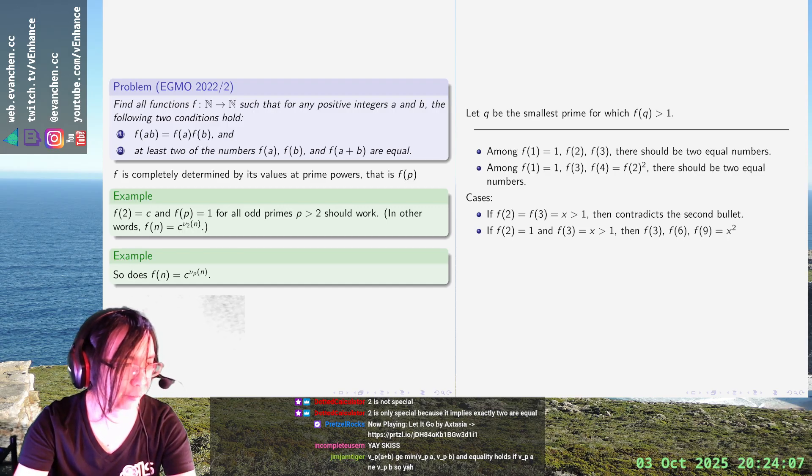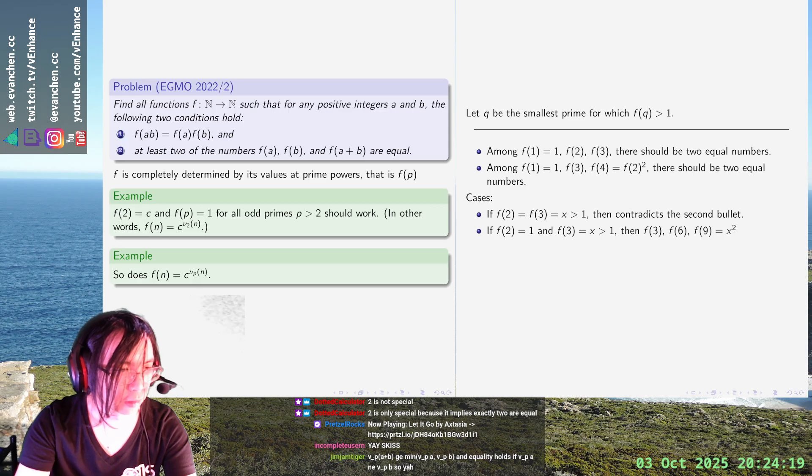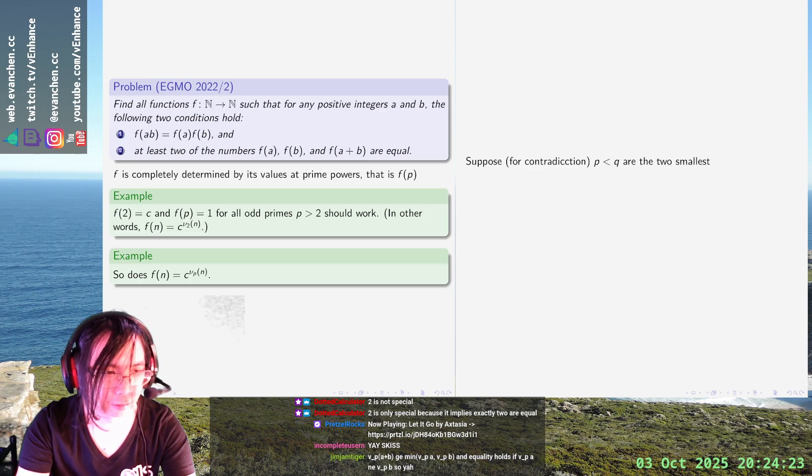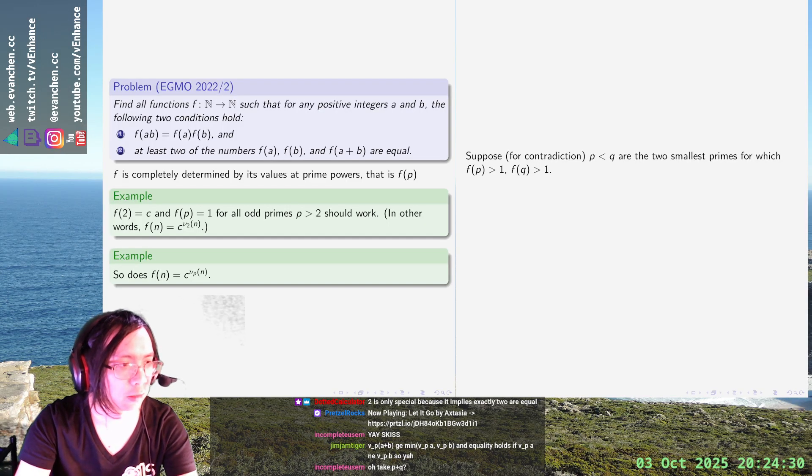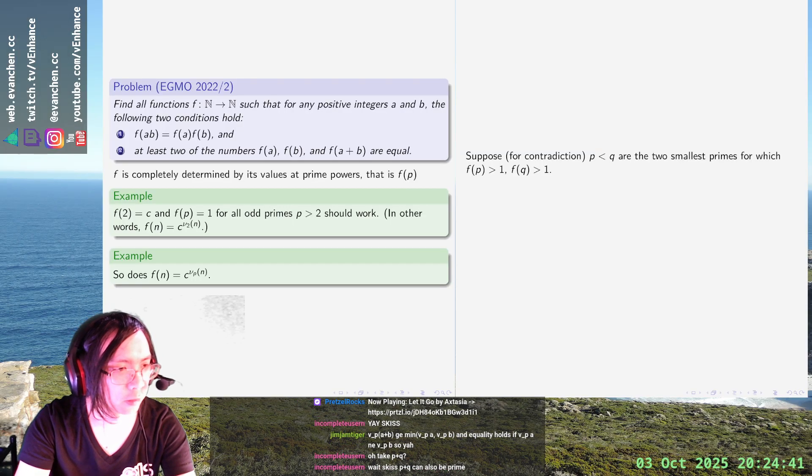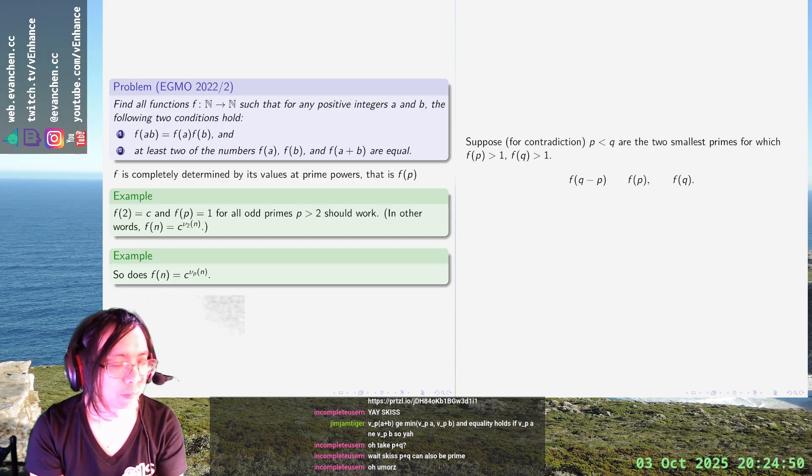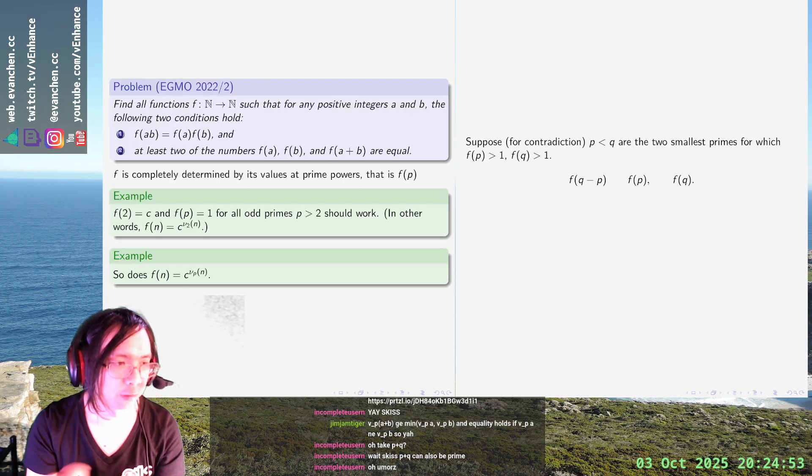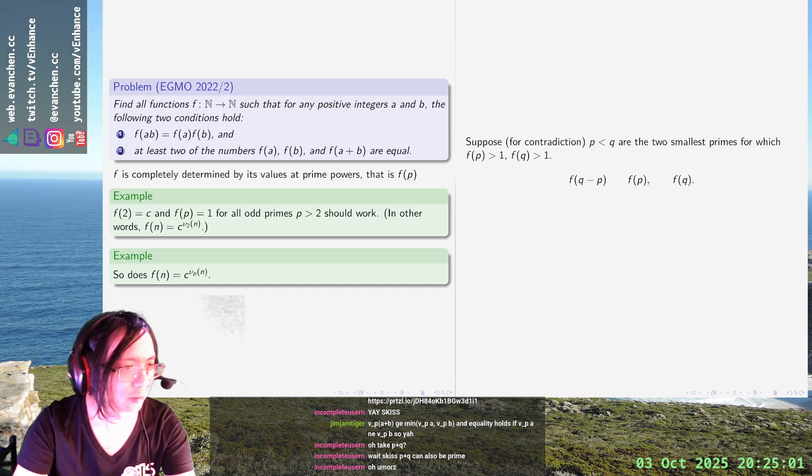If there's only one prime for which this is true, we're fine. Let's do the following: suppose there's two primes p less than q, the two smallest primes for which f(p) is greater than 1 and f(q) is greater than 1. Now I want to try to blow something apart. I'm going to look at f(p), f(q), and f(q minus p), which is in fact not a multiple of p.